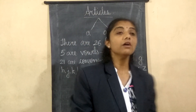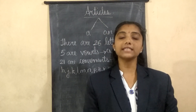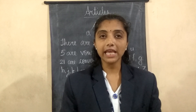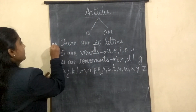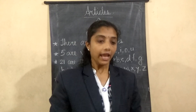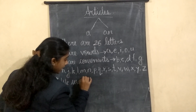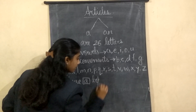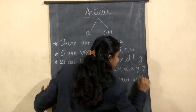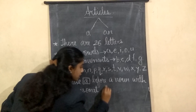Okay, now children, you have to remember: for the vowel sound, if the naming word begins with a vowel sound, we use 'an'. And if the naming word begins with a consonant sound, we use 'a' before it. Okay, so we are going to write down here. We use 'a' before a noun with a consonant sound.